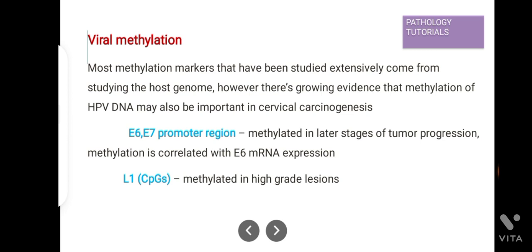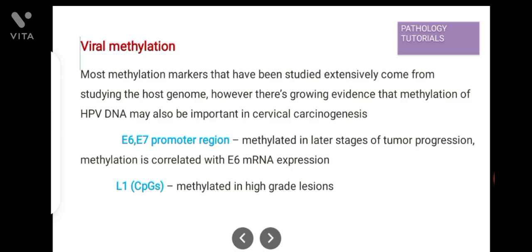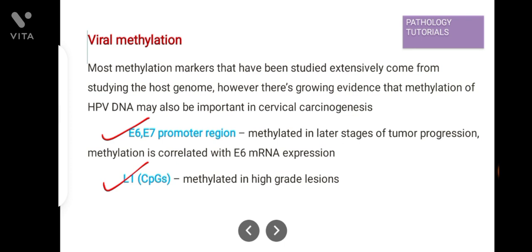Then comes viral methylation. Post-genome methylation has been studied so far, but now there is growing evidence that methylation of HPV DNA may also have an important role in cervical carcinogenesis. E6-E7 promoter regions are methylated in later stages of tumor progression, and L1 CpGs regions are methylated in high-grade lesions. These are the two viral regions that undergo methylation in cervical cancer.